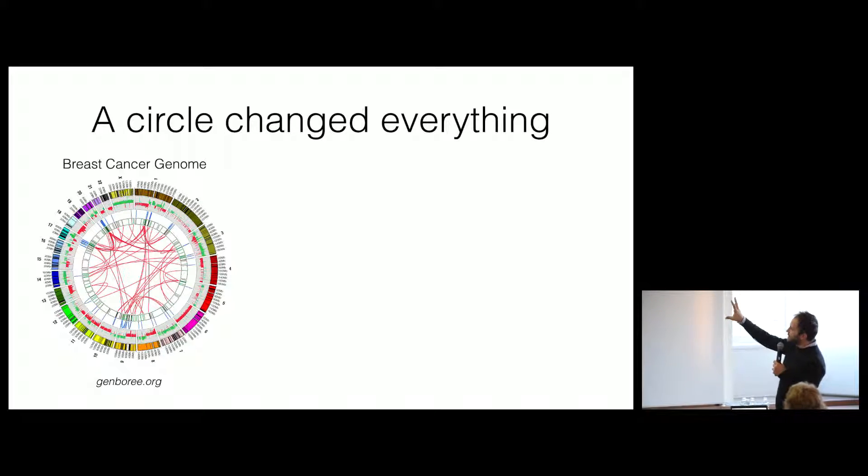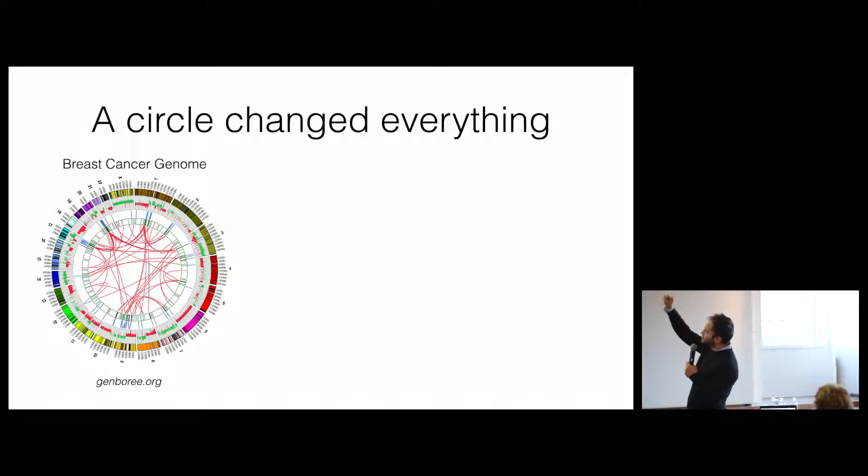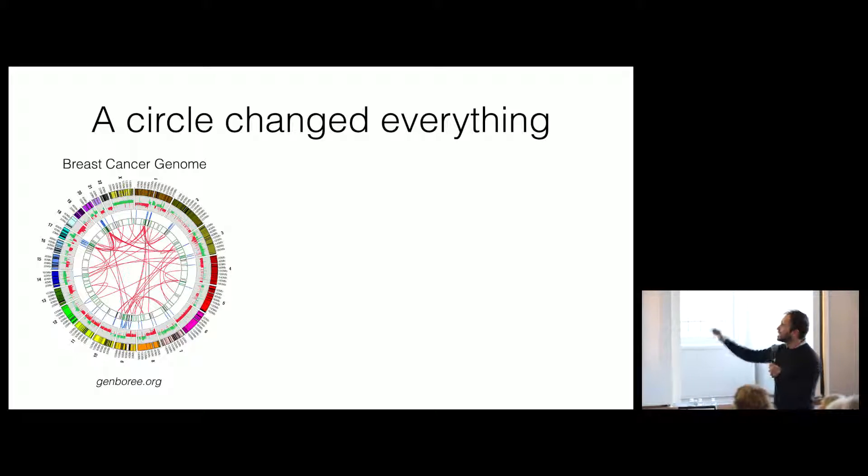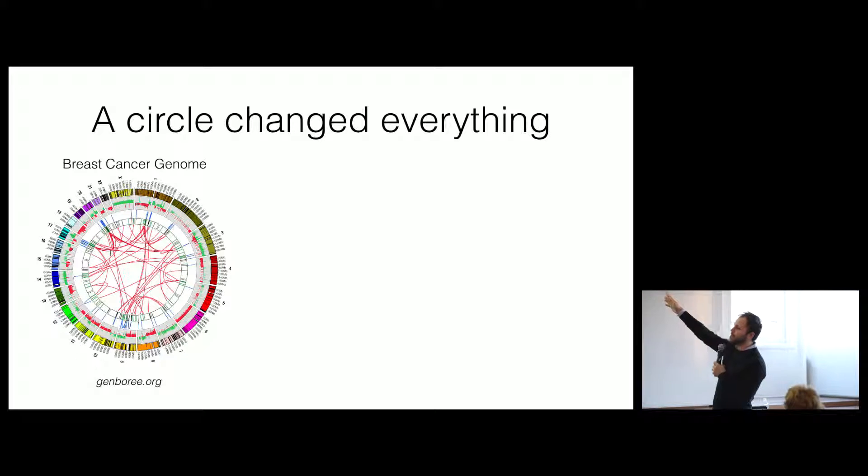But there's actually something very profound happening and changing here in this visualization. And that is that the data that we are seeing here, which is all of the variants in a particular breast cancer cell line, is being displayed on a structure that is informative. So in this case, around the outside you can see that there's these bands and there's these breaks in these bands. And each one of those corresponds to a chromosome in the human genome.